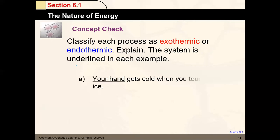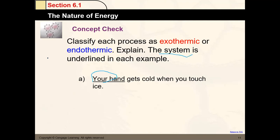Classify each process as exothermic or endothermic — the system is underlined in each example. Your hand gets cold when you touch ice: your hand is the system and it is losing heat, so that is exothermic. Ice gets warmer when you touch it: the ice is gaining heat, going to a higher temperature by absorbing heat — that is endothermic.